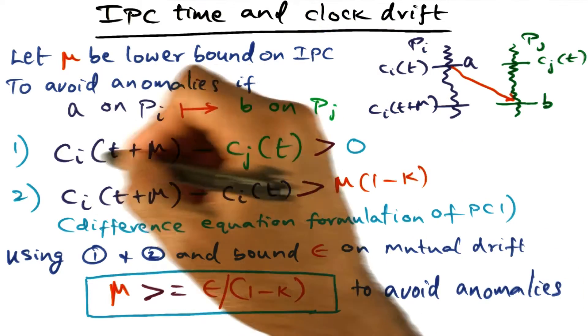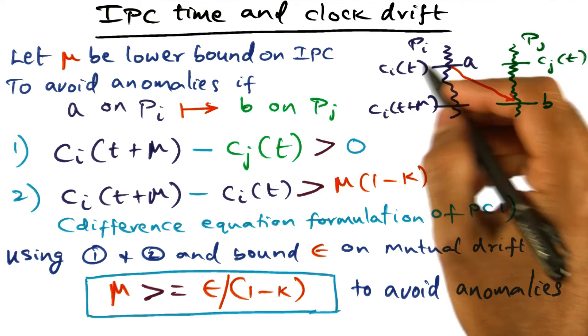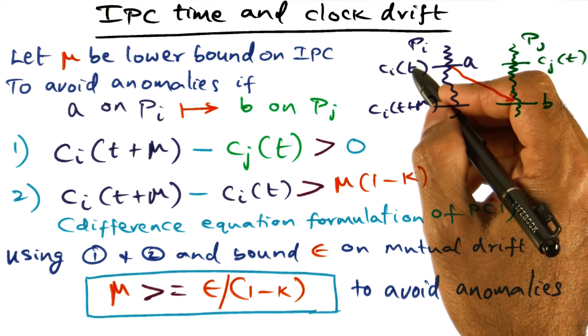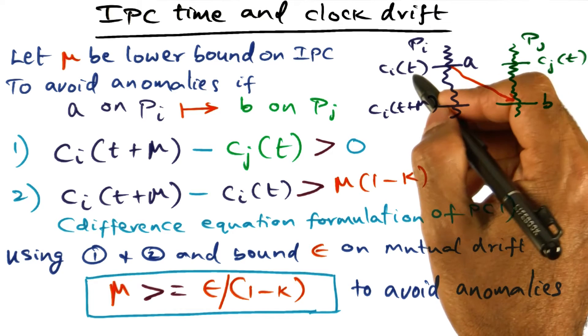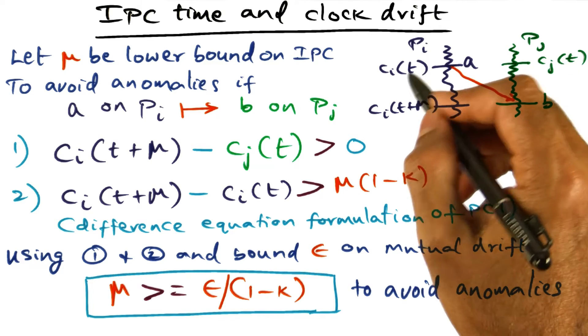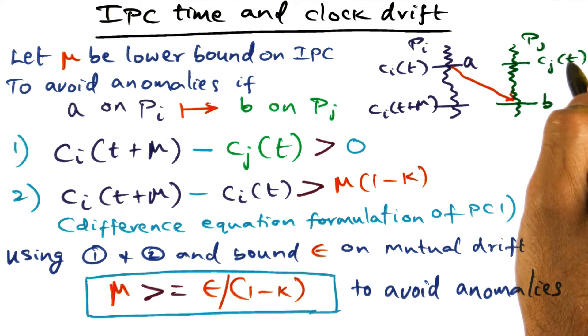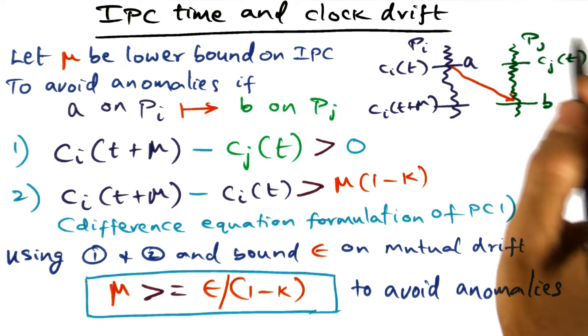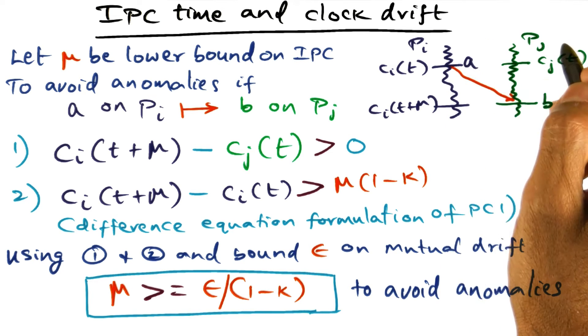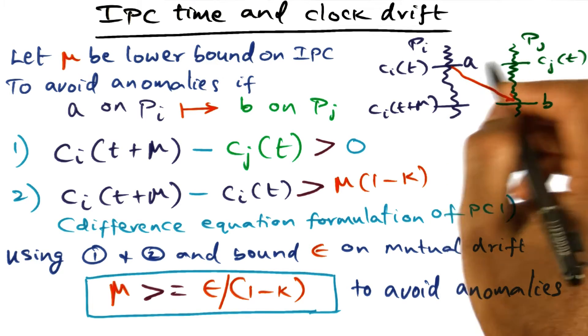This first condition is pretty straightforward. It is coming from the fact that ideally if the clocks are perfectly synchronized, at real time t, ci of t and cj of t should be exactly the same. If the clocks are perfectly synchronized and keeping with real time, ci of t equals cj of t equals t where t is the real time. But they could be individual clock drift and mutual clock drift, which makes them different from each other.